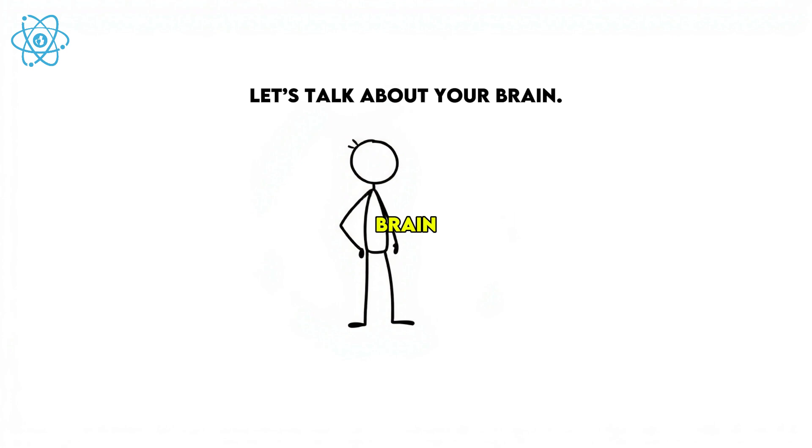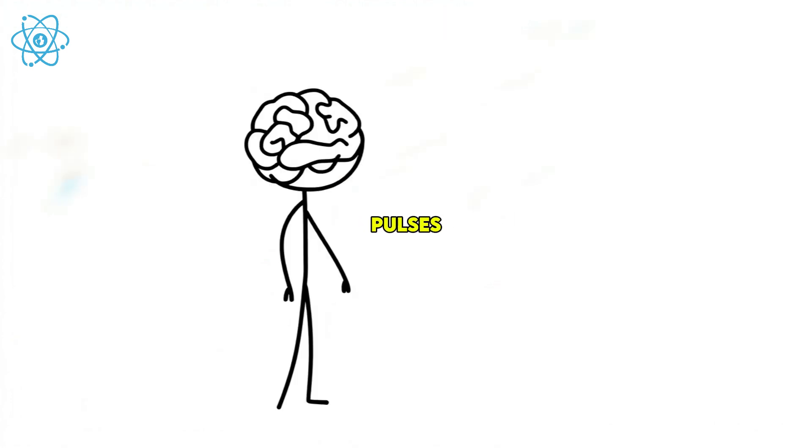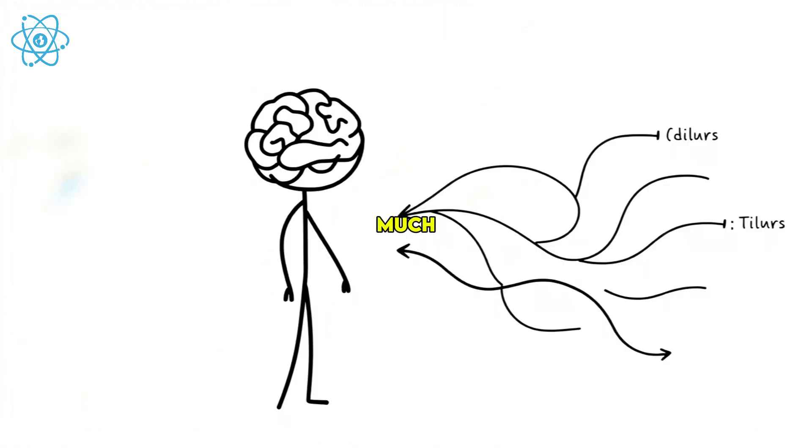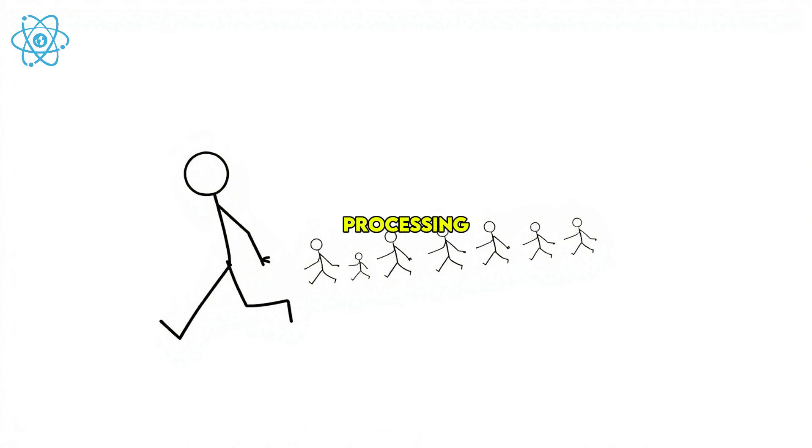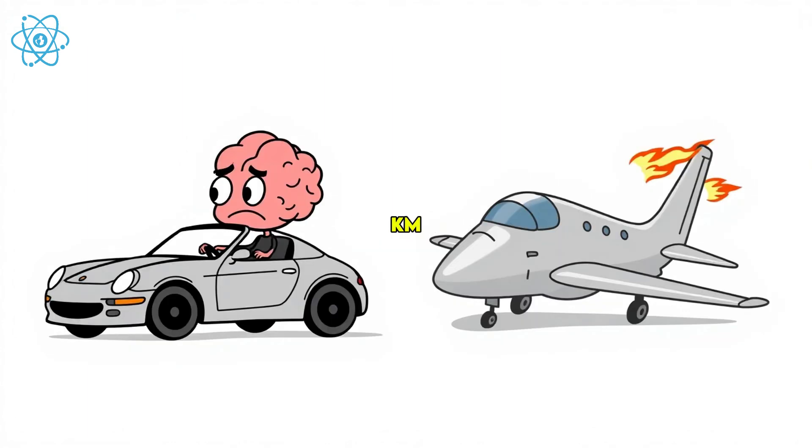Let's talk about your brain. Your neurons work with electric pulses. These signals move much, much slower than light. So while your body is sprinting across the earth in nanoseconds, your brain's still processing the smell of pavement from two kilometers ago.